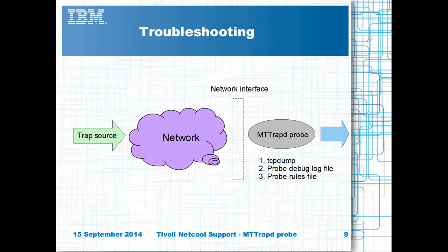You can troubleshoot trap and inform processing using TCP dump or an equivalent application for the platform. If the trap is seen in the PCAP file but not in the probe's debug log file, this suggests the trap was not processed correctly in the SNMP libraries for some reason. You should ensure the latest probe and fixpack are applied to the probe server, then review the PCAP data in Wireshark to ensure the trap is valid. If it is an SNMP v3 trap, ensure the mttrapd.conf file is up to date with the correct engine ID, username and password. It is possible to replicate trap data using the NetSNMP command snmptrap to confirm there is a problem with the probe rather than the device.